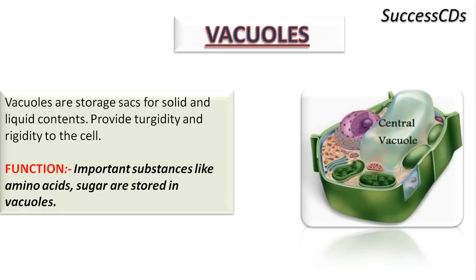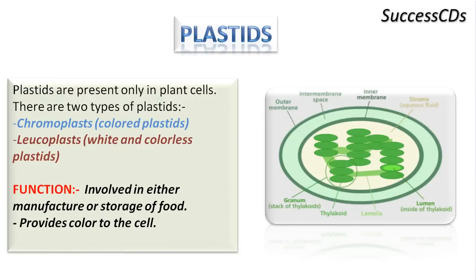Vacuoles are storage sacs for solid and liquid contents. In animal cells, vacuoles are small, but in plant cells they are very large — so large that they can occupy 50 to 90 percent of the cell volume. The function of vacuoles is to store important substances like amino acids and sugars.